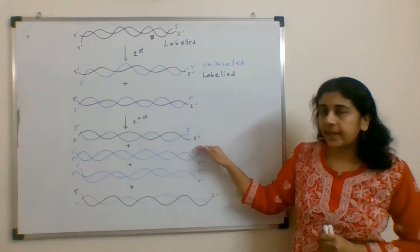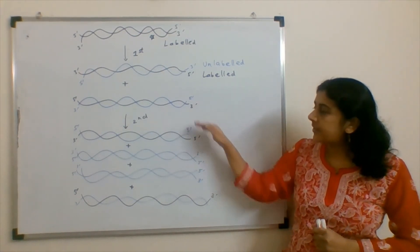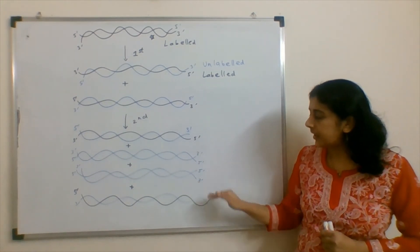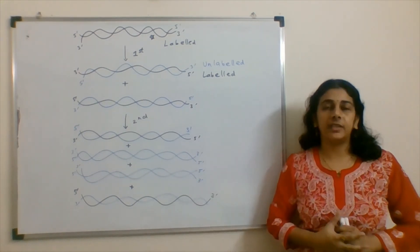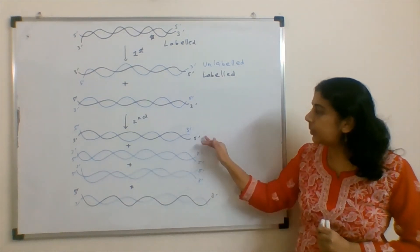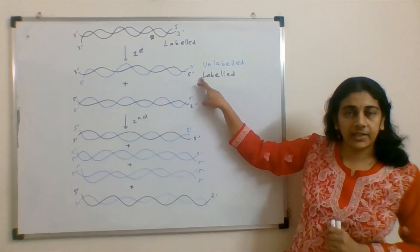What will happen in second duplication cycle? Similarly, one of the strands would be conserved every time and it will give one new strand. Here also we will get two labelled strands. Here also we will get two labelled strands.